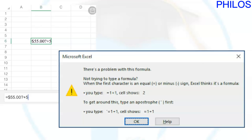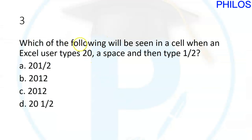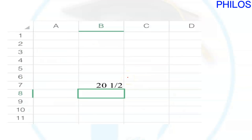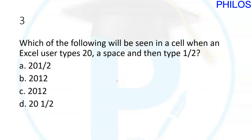Question three says: which of the following will be seen in a cell when an Excel user types 20, then a space, then 1/2? In Excel, I enter 20, then a space, then 1/2. When I click enter, it remains the same — 20 space 1/2. So the answer to question three is D.